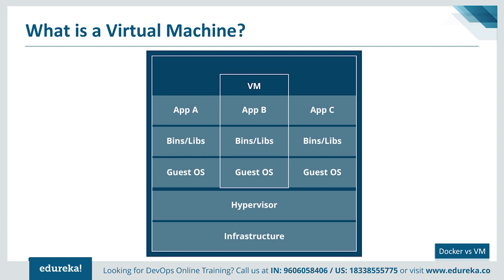A hypervisor, or virtual machine monitor, is software, firmware, or hardware that creates and runs virtual machines. It sits between the hardware and the virtual machine and is necessary to virtualize the server. Since the advent of affordable virtualization technology, IT departments have embraced virtual machines as the way to lower costs and increase efficiencies.